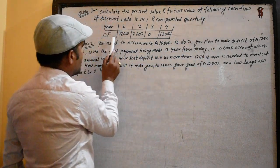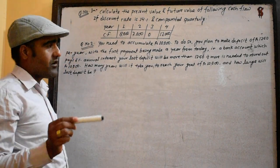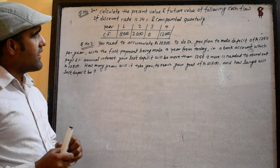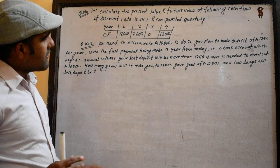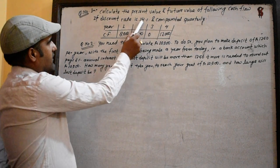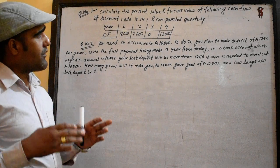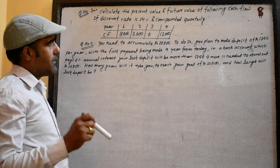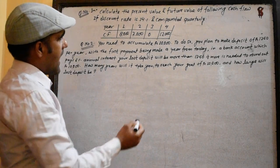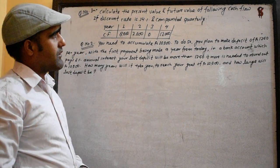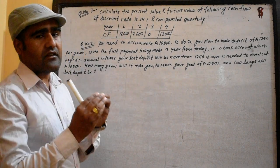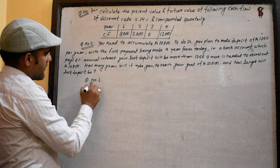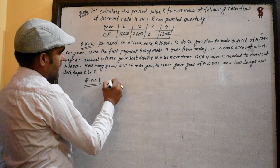The following cash flow is given over 4 years. If the discount rate is 14%, compounded quarterly, we will calculate the present value and future value. This is Question 1.